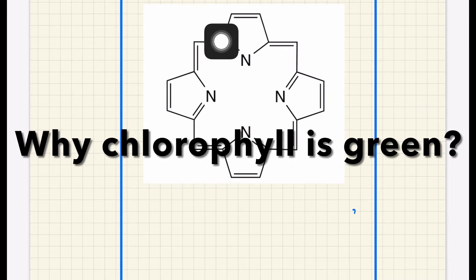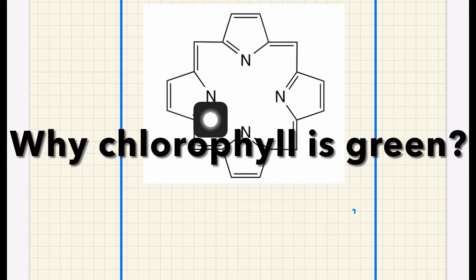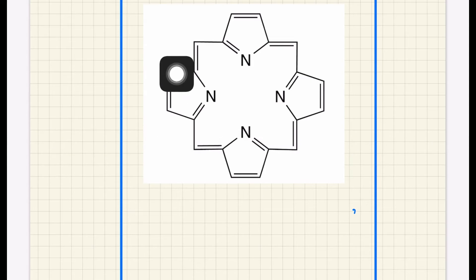Why chlorophyll is colorful, that's the question. If we see the structure of chlorophyll, it consists of an organic nitrogen-containing cyclic structure that is called haem or heme.